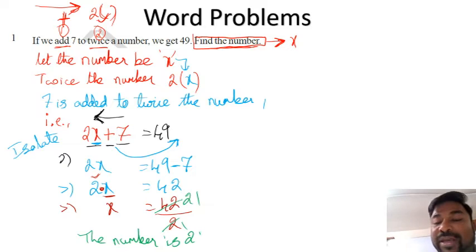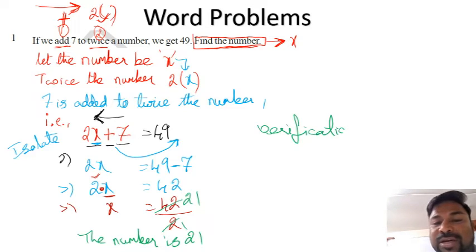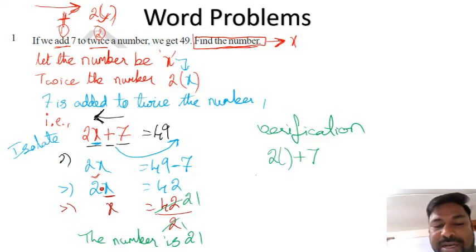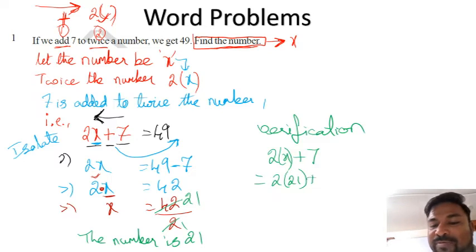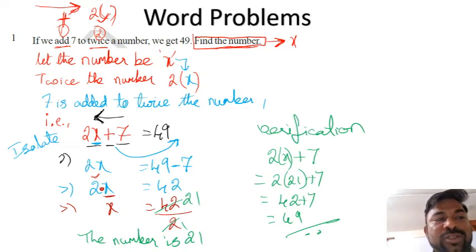Let us verify: 7 added to 2 times the number — the number is 21. So 2 × 21 = 42, plus 7 equals 49. That's verified.